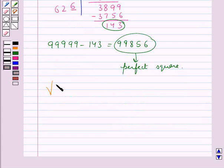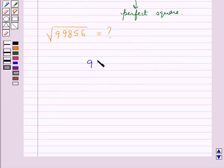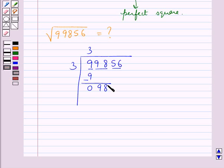Now we find out the square root of 99856. We make pairs. Now 3, 3 times is 9. We take down this pair 98. Double this quotient. We get 6.